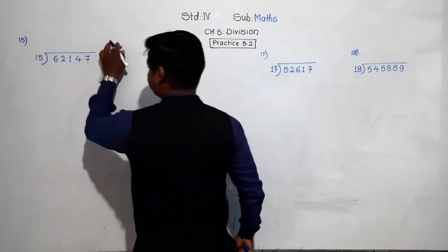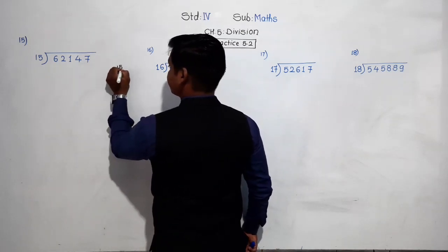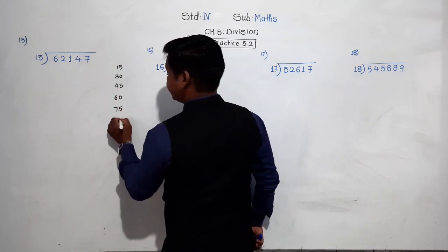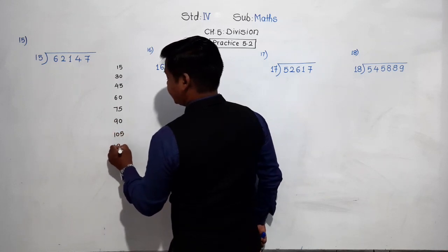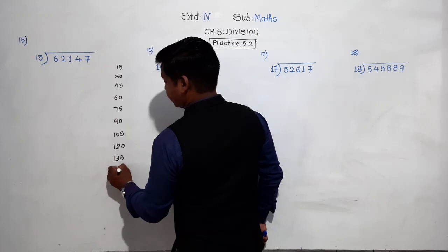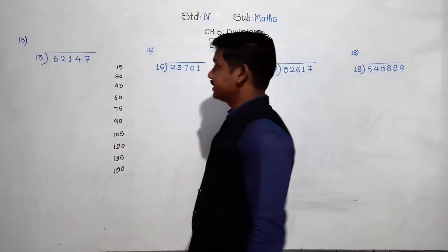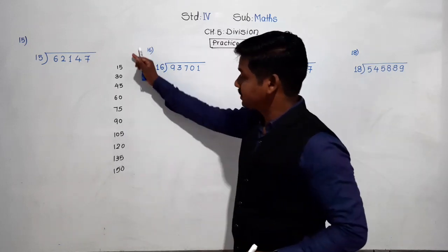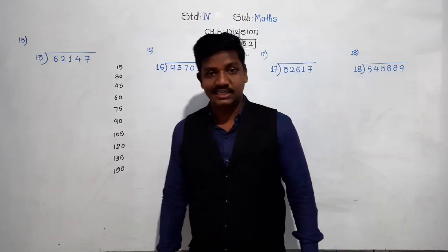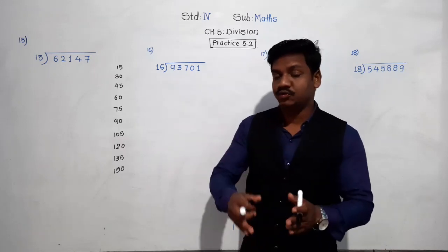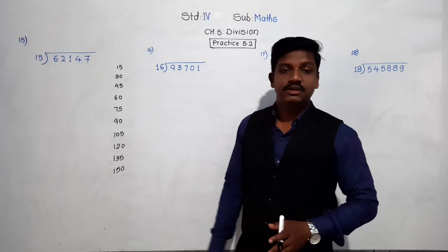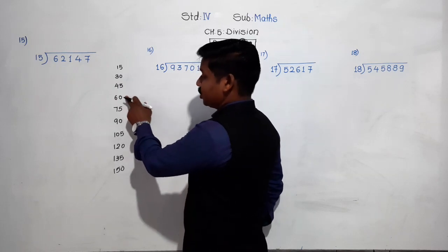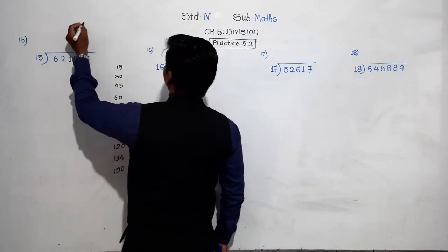Let's write the table of 15 so that it will be easy: 15, 30, 45, 60, 75, 90, 105, 120, 135, 150. Now let's divide. First we divide the first two digits, that is 62. But 62 is not in the table of 15, so we find the smaller number than 62 which is in the table of 15. That smaller number is 60, since 75 is greater than 62.